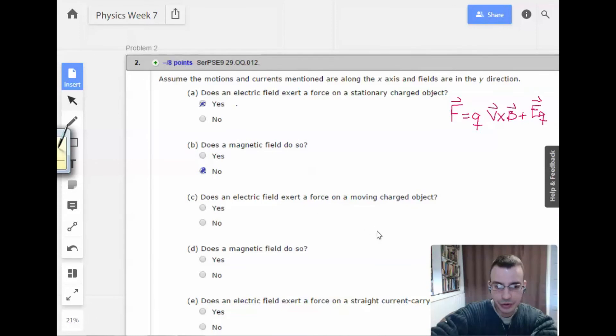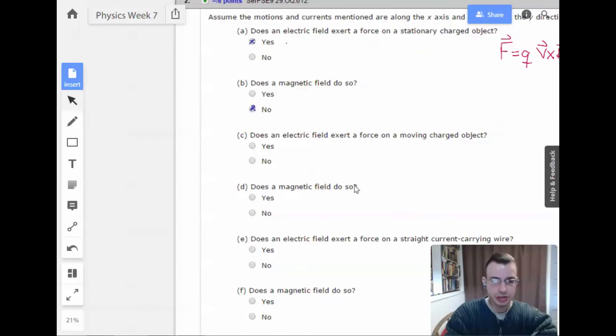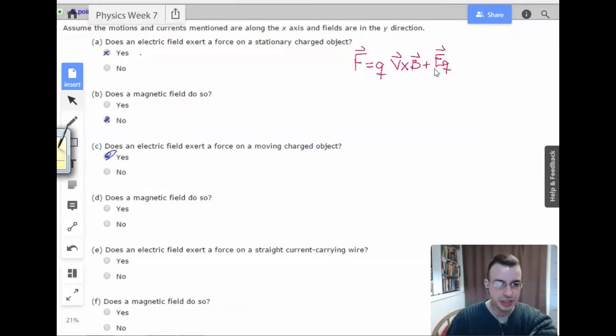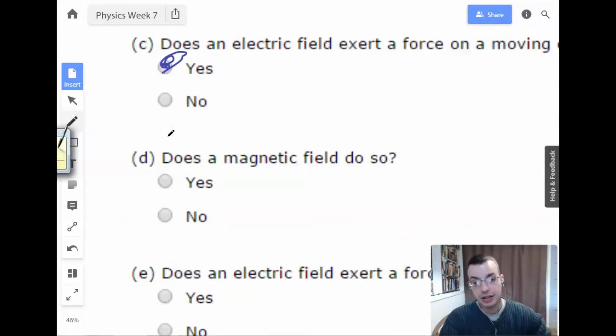Does an electric field exert a force on a moving charged object? Yes. So we have an electric field, we have a charged object. It doesn't matter if it's moving or not. It still exerts a force. So yes. Does a magnetic field do so? All right, so we have charged object, magnetic field, and velocity. Therefore, we have both Q, V, and B. Therefore, yes, this time it does.